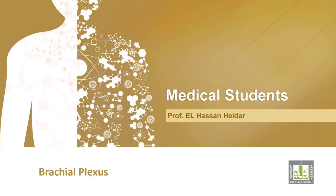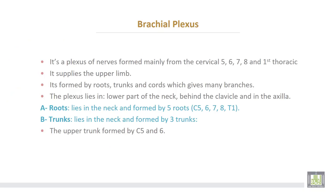Brachial Plexus. It is a plexus of nerves formed mainly from the cervical 5th, 6th, 7th, 8th and the 1st thoracic nerve. It supplies the upper limb. It is formed by roots, trunks and cords which give many branches. The plexus lies in the lower part of the neck, behind the clavicle and in the axilla.